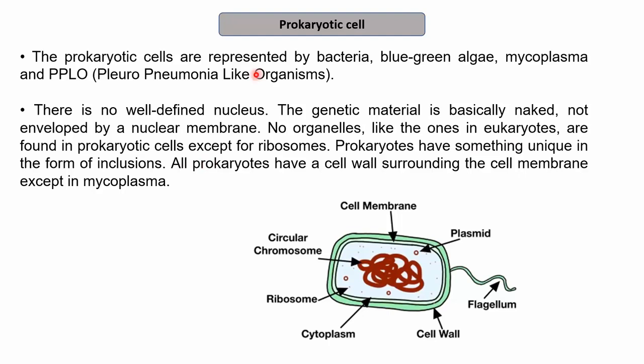What is the difference between PPLO and mycoplasma? Mycoplasma are free-living organisms that lack cell walls. The term PPLO comes from the fact that mycoplasma was found related to infections in the pleural fluid and was named pleuro-pneumonia-like organisms. Prokaryotes do not have a well-defined nucleus and do not have any of the organelles present in eukaryotes — no Golgi apparatus, no endoplasmic reticulum, or other organelles found in eukaryotes. Ribosomes are present in both prokaryotic and eukaryotic cells.